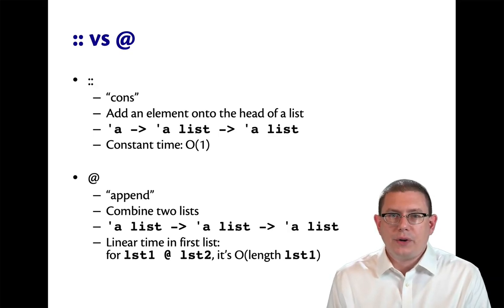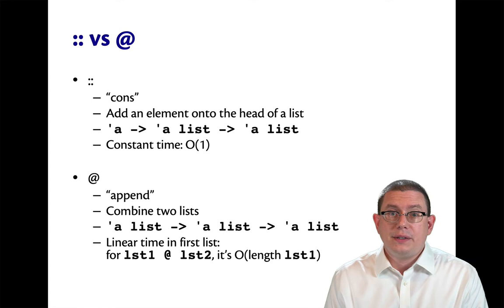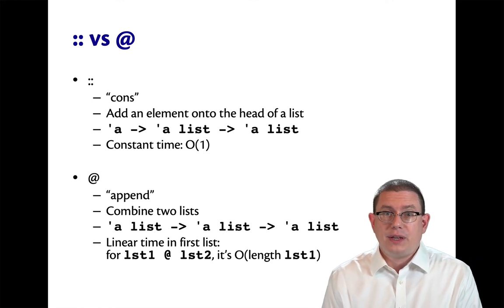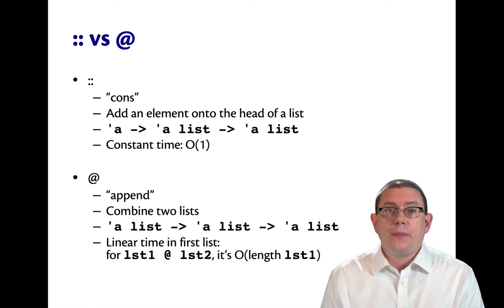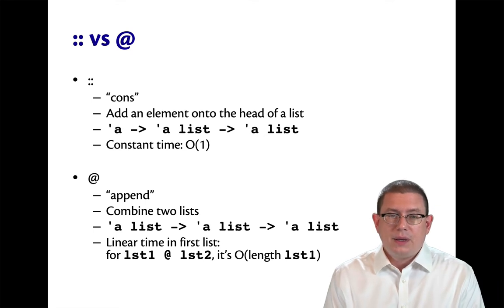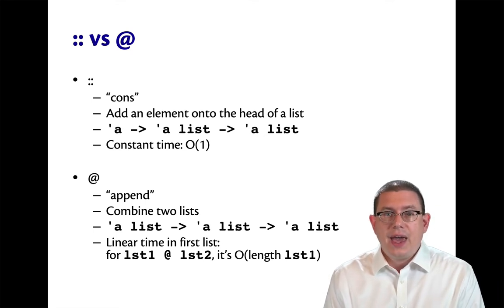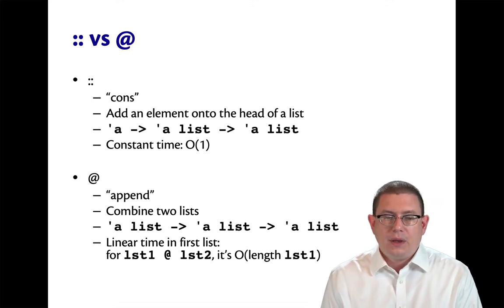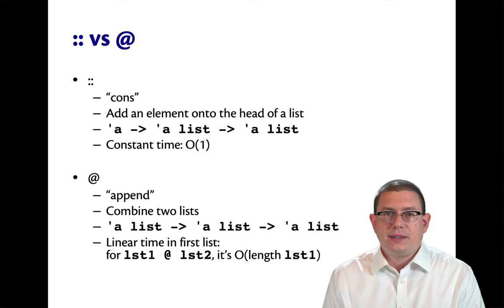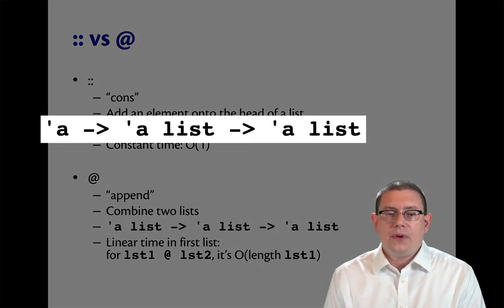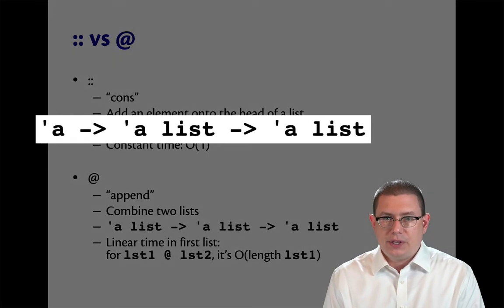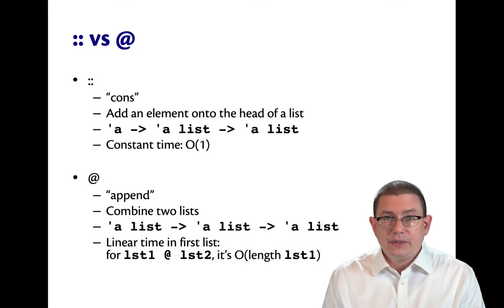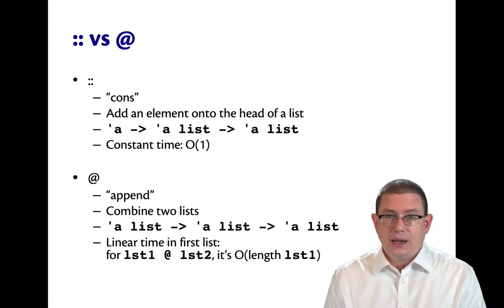We've now seen two list operators. Let's briefly pause our discussion of pattern matching to take a closer look at them. The cons operator, written with a double colon, adds an element onto the head of a list — you could think of that as prepending an element. Its type reflects that: alpha arrow alpha list arrow alpha list. You give it an element of type alpha, a list which contains elements of type alpha, and it gives you back another list that contains elements of type alpha.